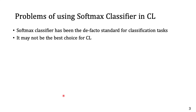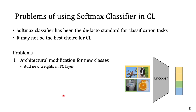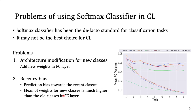The softmax classifier has been the de facto standard for classification tasks, so when it comes to continual learning, the softmax classifier may be the first one to try, but it may not be the best. There are several problems with the softmax classifier. First, whenever the model sees new classes, it needs to add new weights in the fully connected layer to accommodate those new classes. Second, there is the recency bias, which refers to the prediction bias towards the most recent classes. We find that the mean of weights for new classes is much higher than for old classes in the fully connected layer, which is why it produces a strong prediction bias.